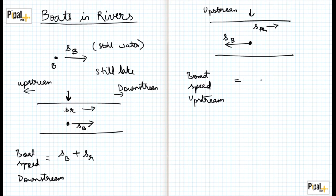Boat speed upstream is equal to the speed of the boat minus the speed of the river. Now what happens is if the speed of the river is greater than the speed of the boat, then the boat actually moves downstream because the stream is going to completely overpower the speed of the boat and nullify it.